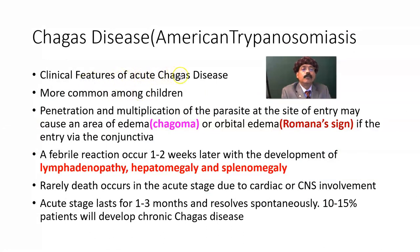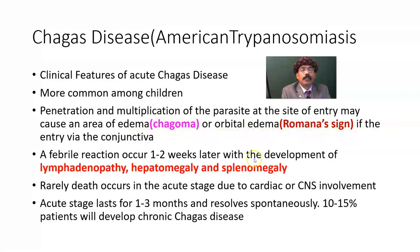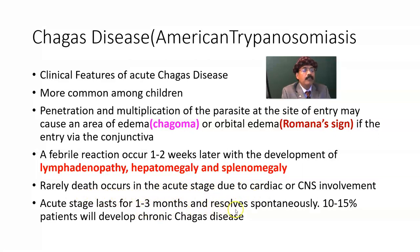Clinical features of acute Chagas disease: it is more common among children, average age 4 years, but it may happen at any age. Penetration and multiplication of the parasite at the site of entry may cause an area of edema called chagoma, or orbital edema called Romaña's sign, if entering via the conjunctiva. Fever and other symptoms occur one to two weeks later with the development of lymphadenopathy, hepatomegaly, and splenomegaly. Rarely, death occurs in the acute stage due to cardiac or CNS involvement. The acute stage lasts one to three months and resolves spontaneously.